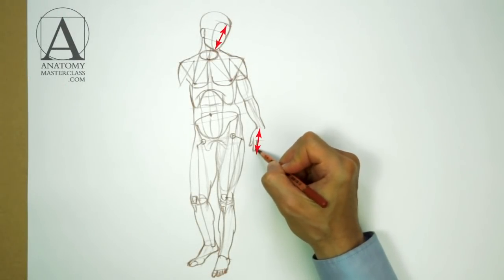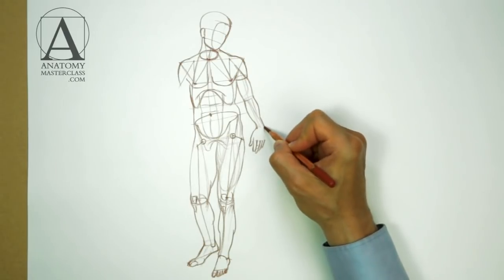Remember, the length of the hand from the wrist line to the tip of the middle finger is equal to the height of the face from the bottom edge of the chin to the hairline. This is an important measuring unit for the human body.